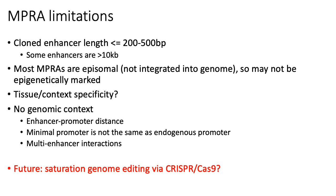Another problem with MPRA is that in general, because you're removing these enhancer sequences from the surrounding genomic context and putting them in an artificially designed reporter plasmid, you're testing it out of context. Enhancers generally work by looping around and interacting with transcription start sites, and you basically lose these enhancer-promoter interactions, the looping, and the chromosomal environment — none of that is taken into context with MPRA. Furthermore, the MPRA assay uses a minimal promoter, which is different from the actual promoter typically used endogenously, so you could be missing potential enhancer-promoter interactions even ignoring the lack of looping.